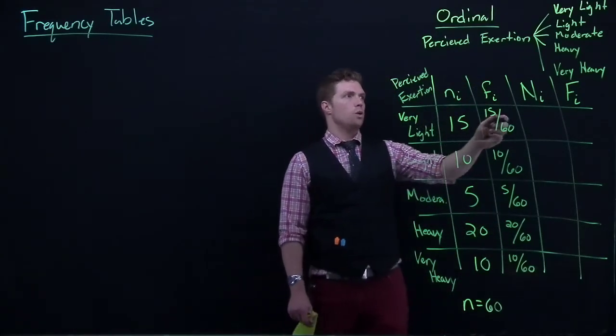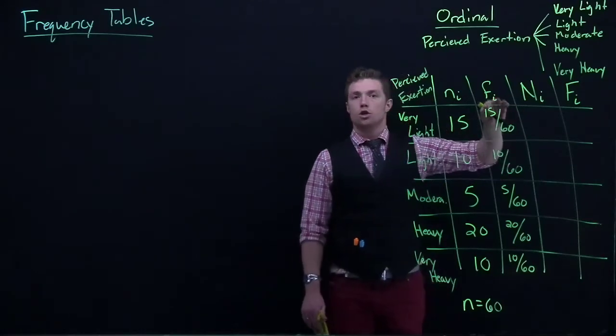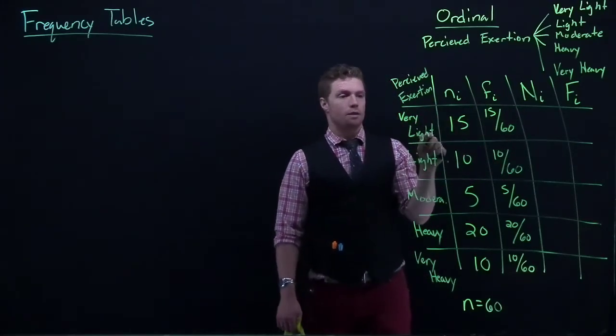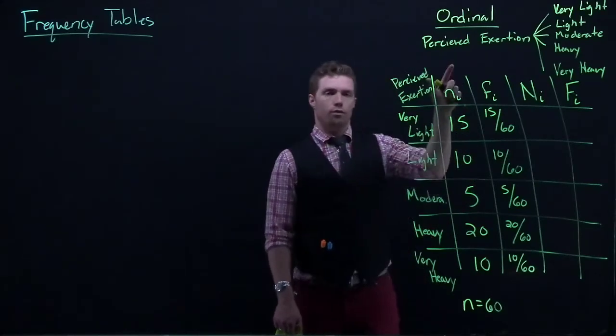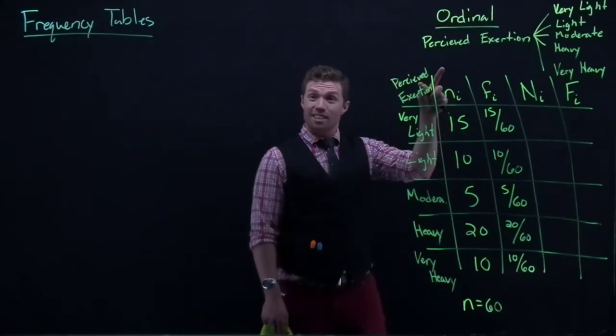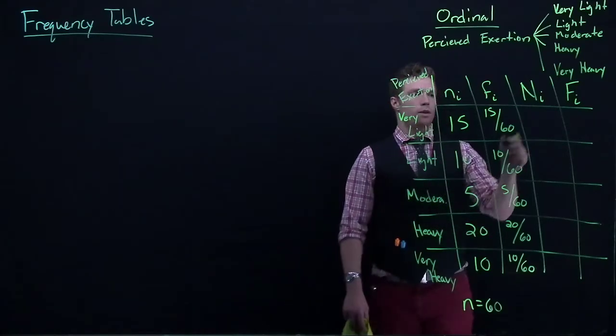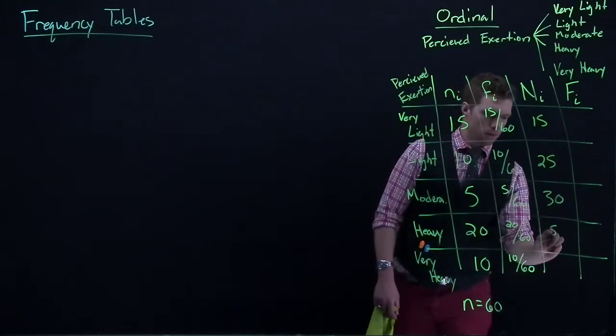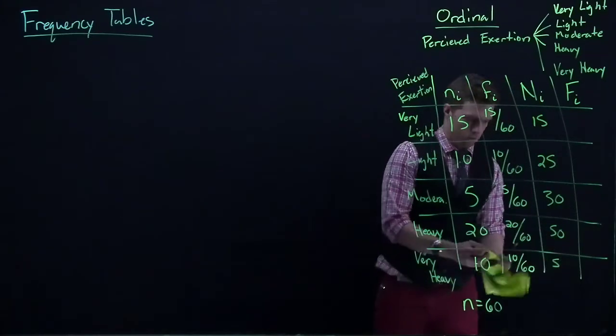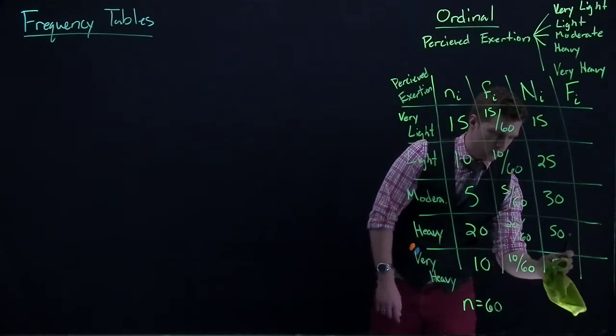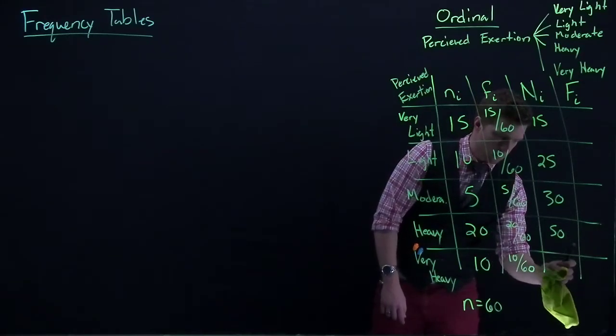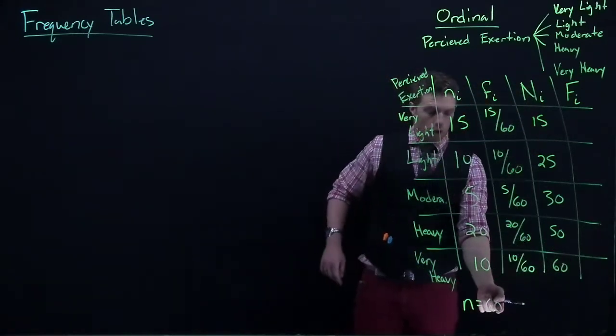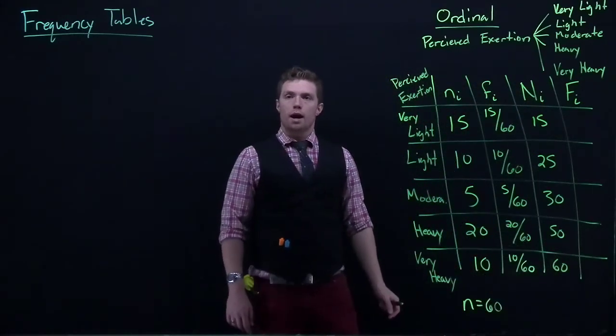Okay, with all that, we can then go and look at the cumulative frequency, or how many times was it very light or fewer? Or then light or fewer? Moderate or less? And so then we can go. This is 15, 25, 30, 50, and another 5. That should be 60. All right, because the last one in our cumulative frequency always should add up to our sample size.